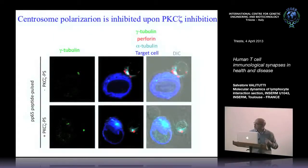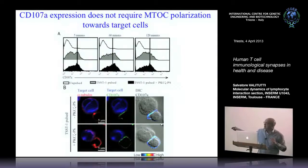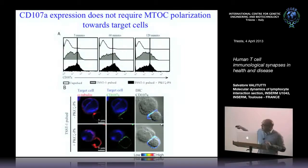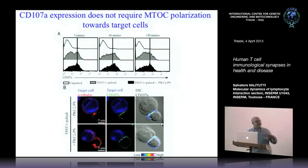We observed this by microscopy: cells were fixed, stained with anti-LAMP-1, then permeabilized and stained with anti-microtubule antibody. After only 3 minutes of conjugation, LAMP-1 can be detected at the contact site. In non-inhibited conditions, the MTOC goes to the synapse and LAMP-1 is exposed there. But when PKC-zeta inhibition occurs, the MTOC is relatively far from the synapse yet LAMP-1 exposure still occurs, indicating that secretion can be initiated even when the MTOC is physically far from the immunological synapse.